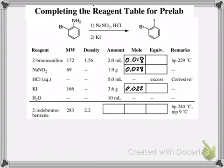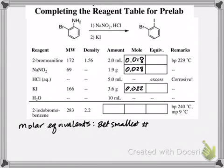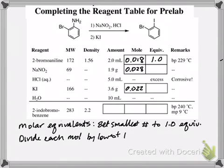The next thing we're going to do is we're going to calculate the molar equivalents, or the molar ratios, because those are going to be easier numbers to compare than the actual mole numbers. So the way we do that is we determine which amount of moles is the smallest number, and we're going to set that to be 1.0 equivalents. And then we're going to divide each of the other numbers by that lowest number. So 18 millimoles is the smallest number.